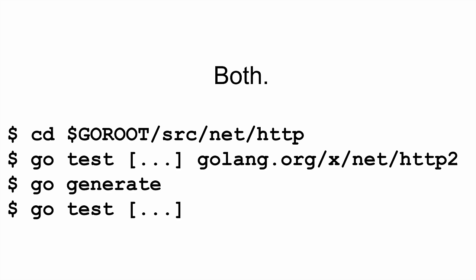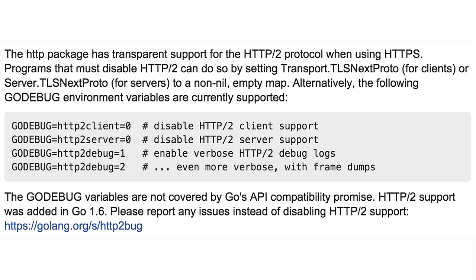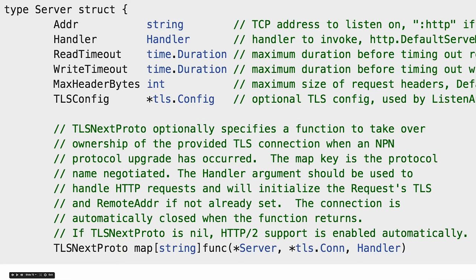Tests are in both places. You have to run the tests from HTTP2, then go generate, then run the tests in the main repo. The goal is it just works — on by default. We document how to turn it off if you really have to, and if you have to turn it off, that's basically a bug. It should just work by default and you shouldn't have to touch it.